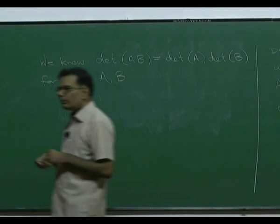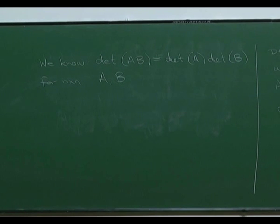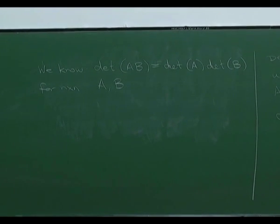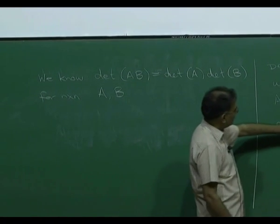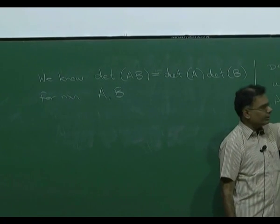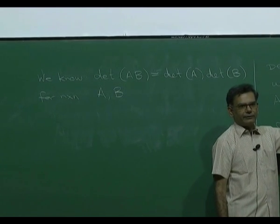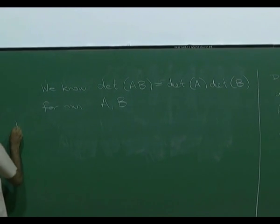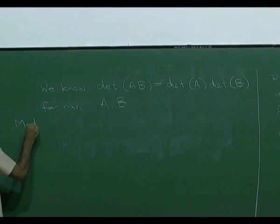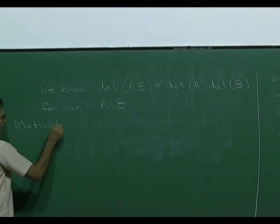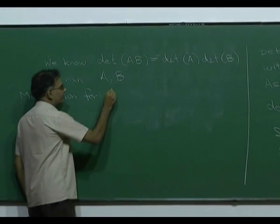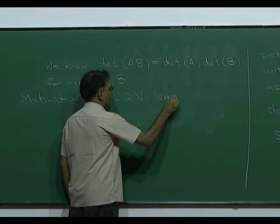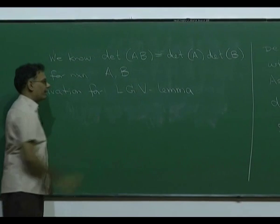In order to do that I will need to set up some notation. I want to motivate the LGV lemma — Lindström-Gessel-Viennot — by looking at the definition of the determinant in a somewhat different way. So: motivation for LGV.